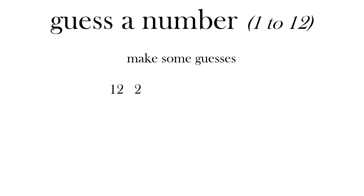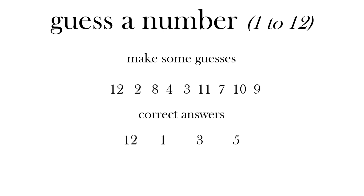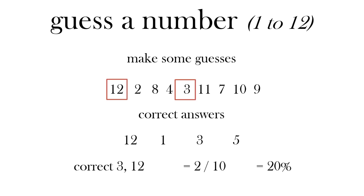Guess a number between 1 and 12 again - make some guesses: 12, 2, 8, 4, 3, 11, 7, 10, 9. That's 10 guesses. How many correct? The answers were 12, 1, 3 and 5 - so 2 correct. 2 out of 10 is 20%, not so good.